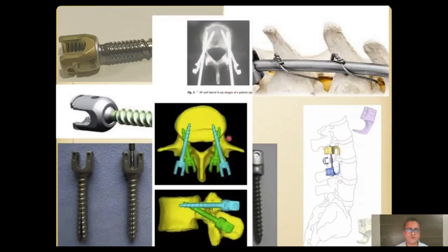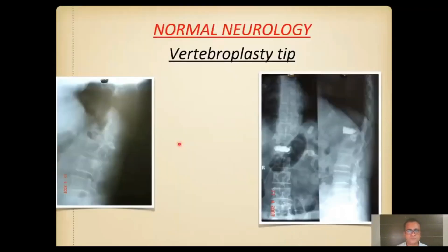With pedicle screws, you can also take advantage of different trajectories: an outwardly directed cortical screw, a medially directed screw, or an angulated screw toward the superior cortex. Wherever there is good hold in the superior part of the pedicle and in the cortical bone of the pedicle, you take advantage of these different trajectories.